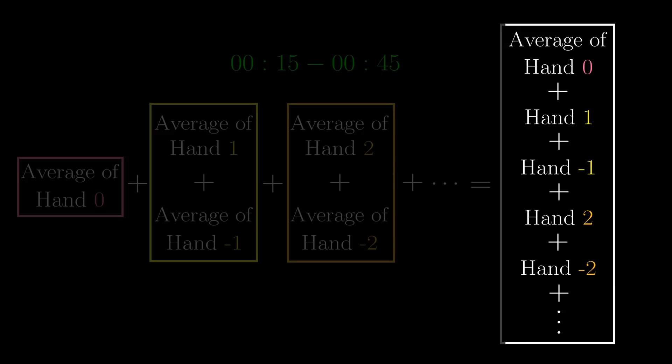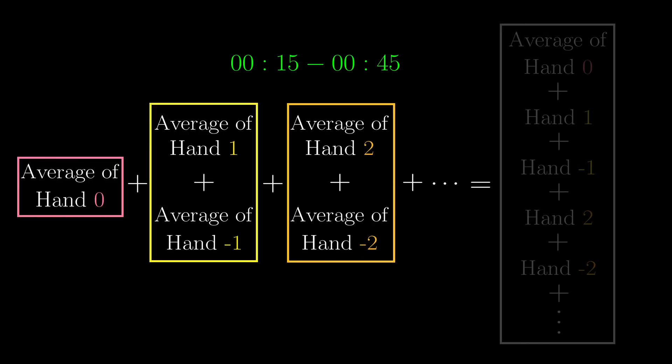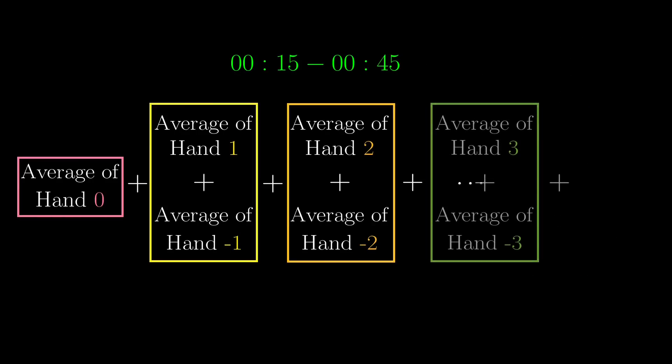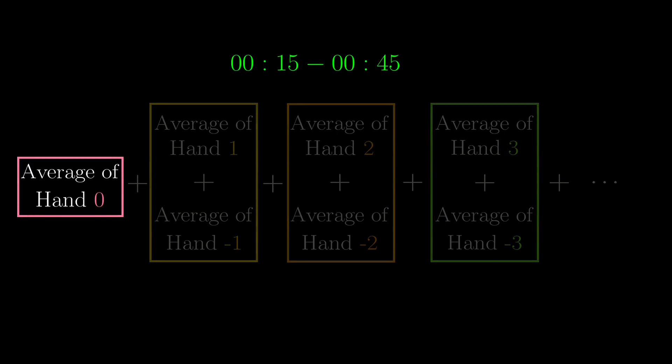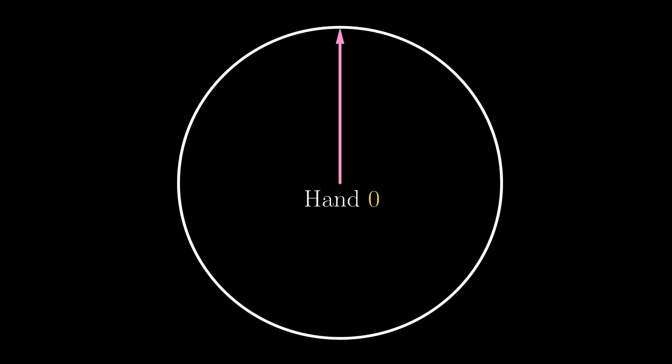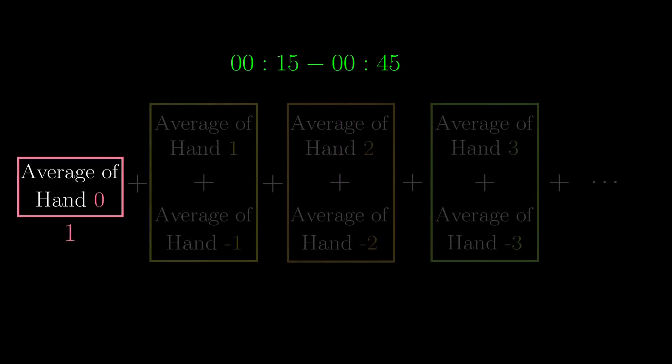So first, we compute the left side, and let's start with hand number 0, which is the easiest to compute the average position of. Hand 0 is stationary, it always points up. Let's just say the clock hand is 1 unit long, then the position of the tip is just 1 unit upwards.